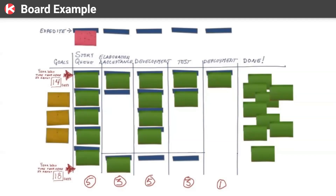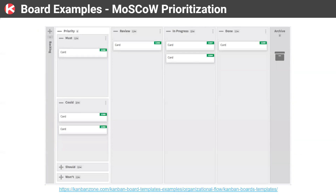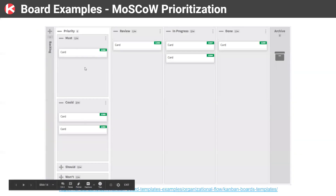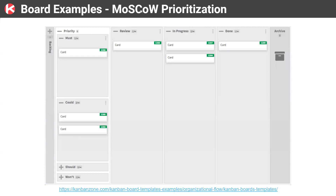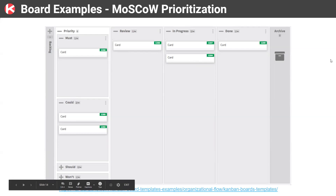This team has decided to have a board with a separate lane called an expedite lane. A board doesn't have to be a simple table or box — it can have separate lanes, multiple lanes, columns, and rows. It can look however you want as long as you can still enforce WIP limits. Here's another example: a Kanban board with multiple rows in only a single column — the priority column — using the MoSCoW technique to visualize which cards are must, could, should, and won't, and then they flow on the board.